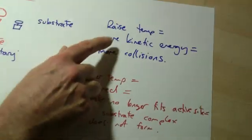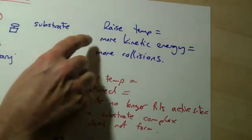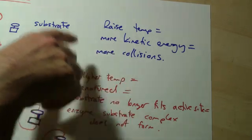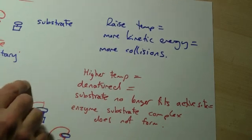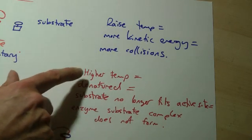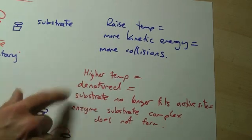So two things going on: at low temperatures you don't have enough kinetic energy, so there aren't many collisions - raising it will give you more collisions and that holds true all the way up. At very high temperatures, or above the optimal temperature, it becomes denatured and the substrate doesn't fit the active site.